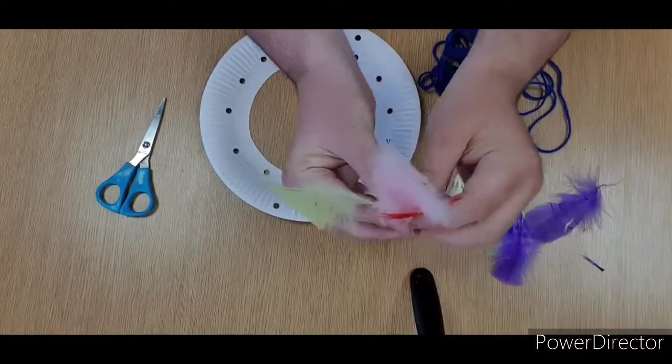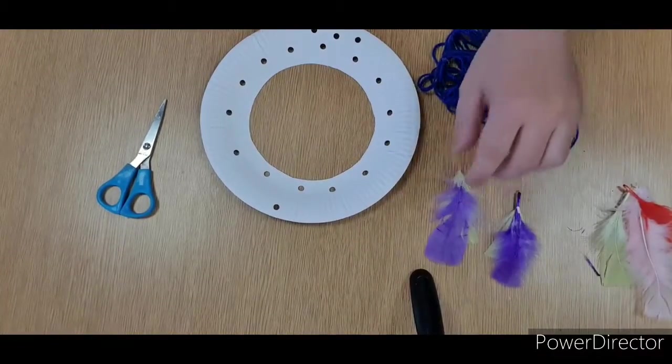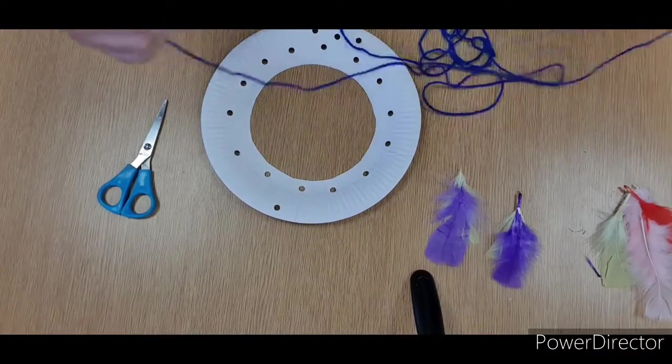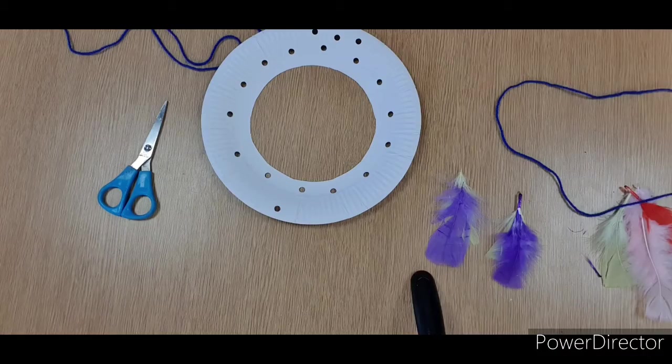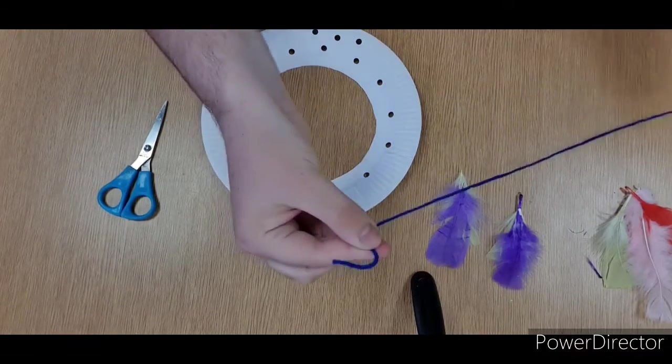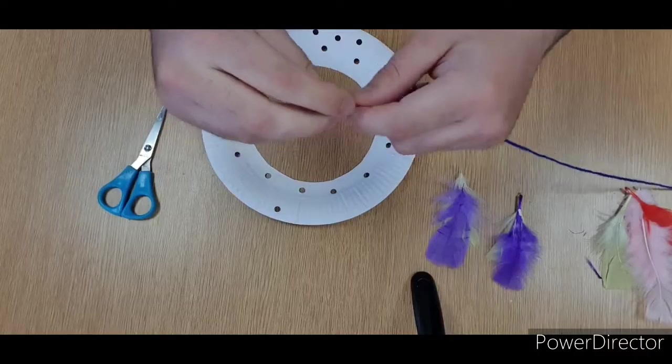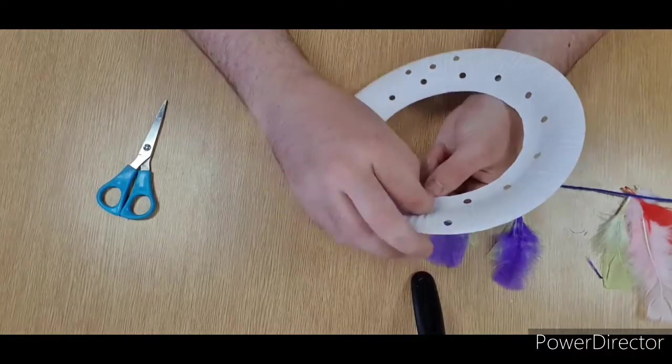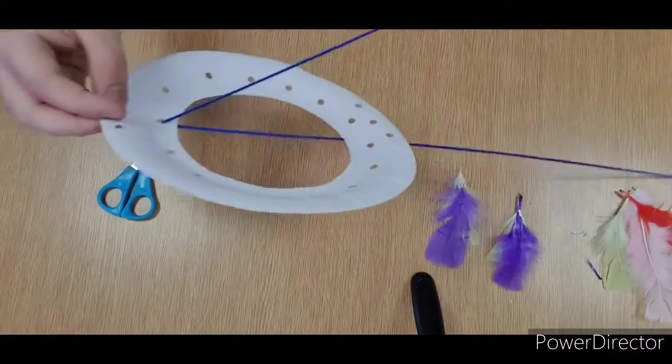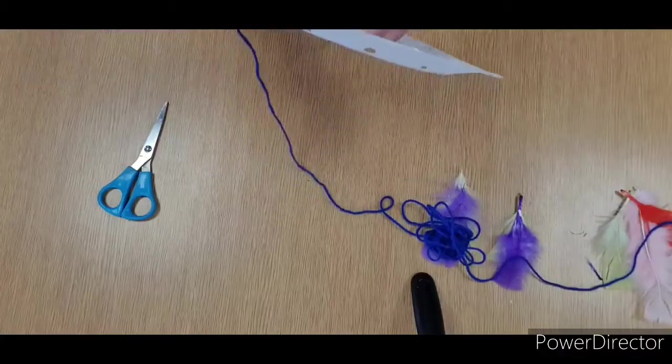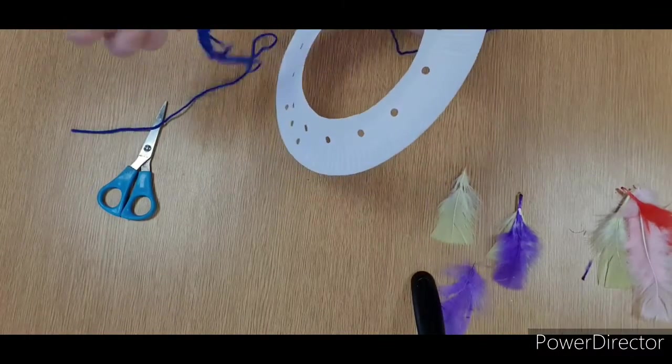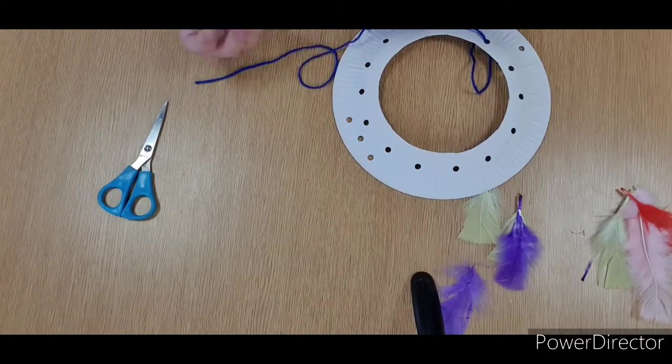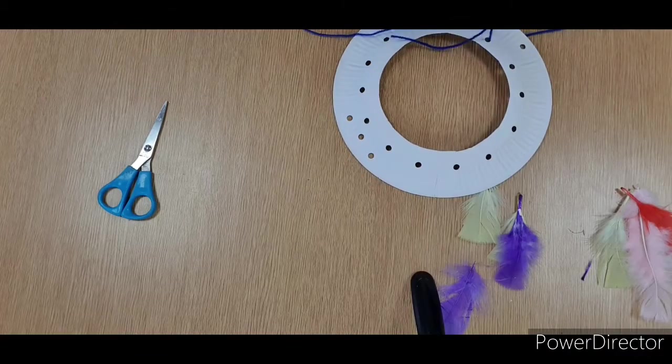Let's get on with it then. Find the end of your string or wool, whatever you're using. You've got the end here, perfect. All we're going to do is just start feeding it through, nice simple and easy. Just pull all the way through. Might take a while because you've probably got quite a bit of it. If it's knotted, unknot it and we can get back to it.